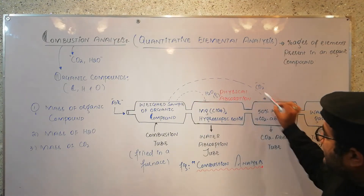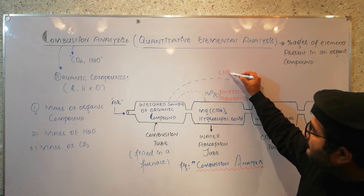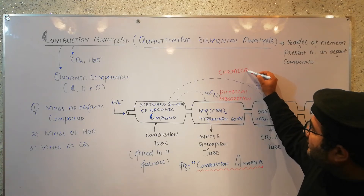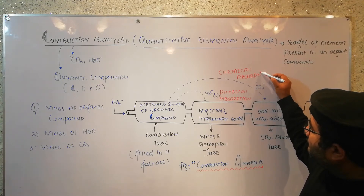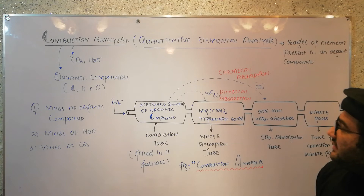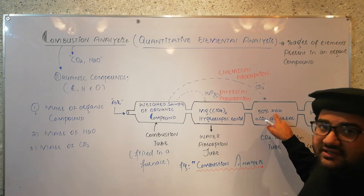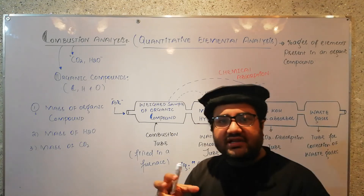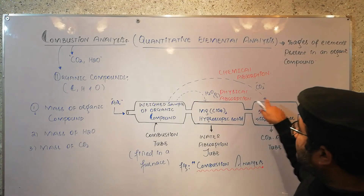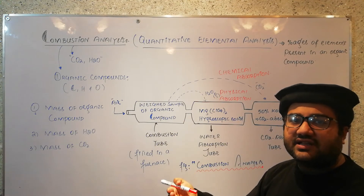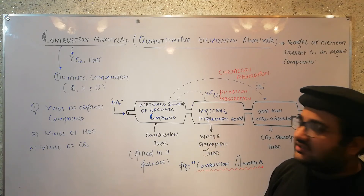When carbon dioxide is absorbed in 50% KOH, this absorption is chemical absorption. Why? Because CO2 is an acidic oxide and KOH is a base. This acidic oxide and base react together and a chemical change takes place, so this absorption is chemical absorption. While the water molecules are just attached to magnesium perchlorate in the form of water of crystallization — no chemical change — so that absorption is physical absorption.